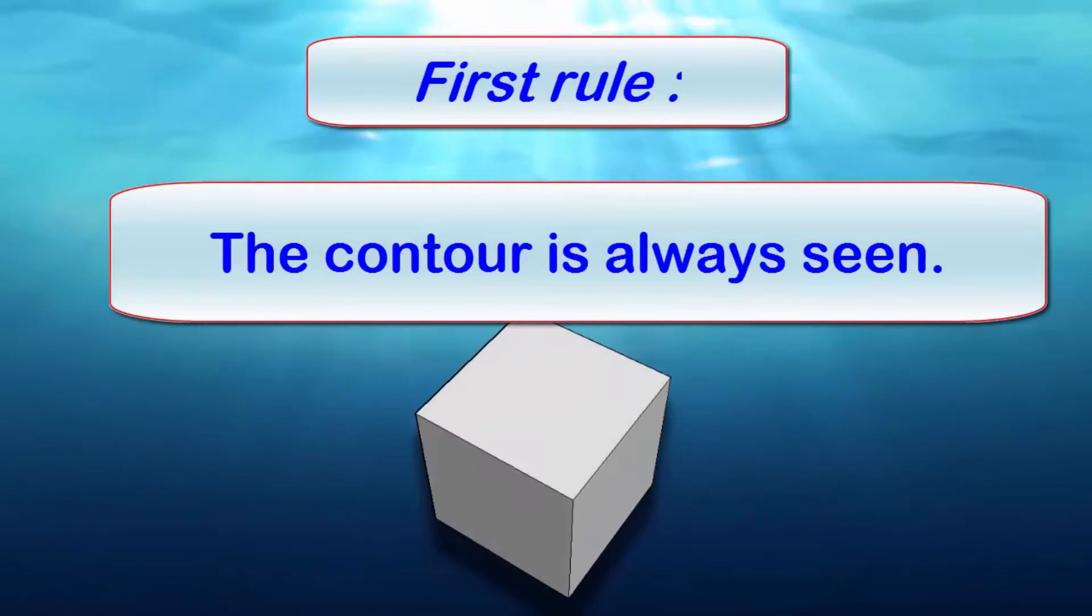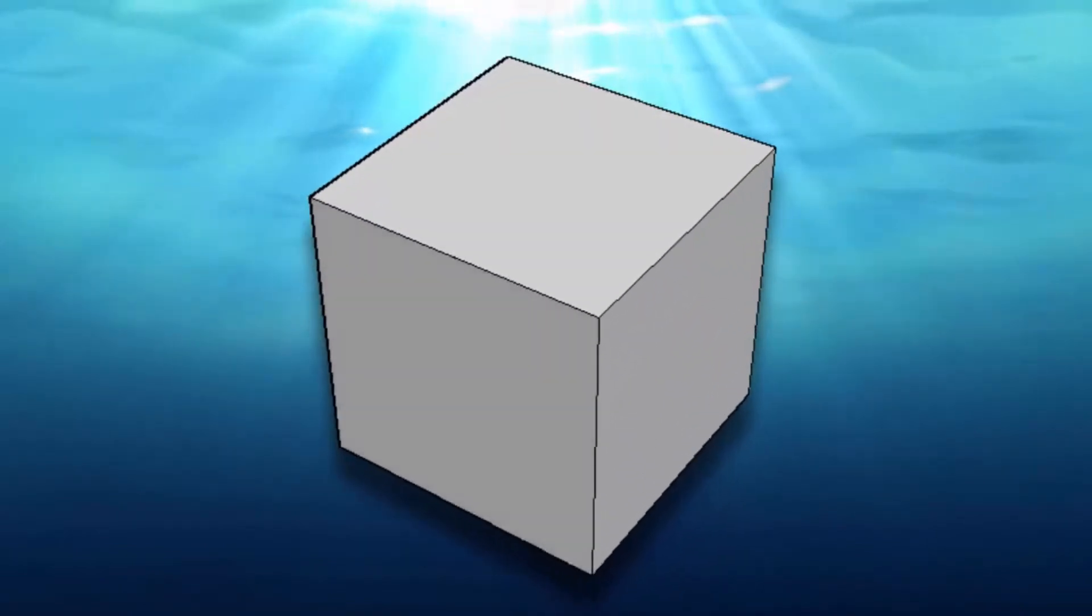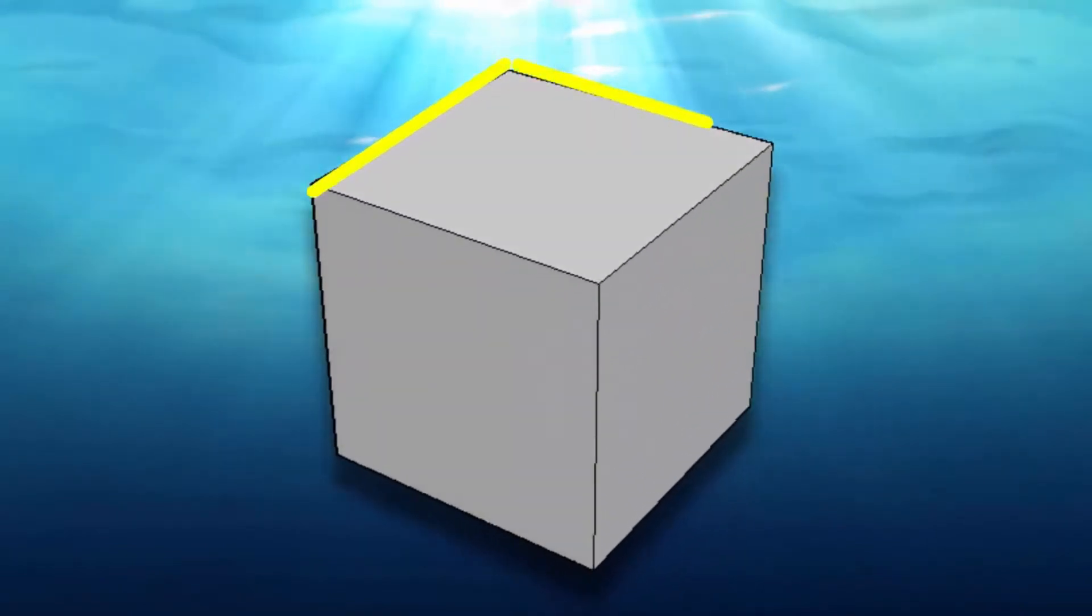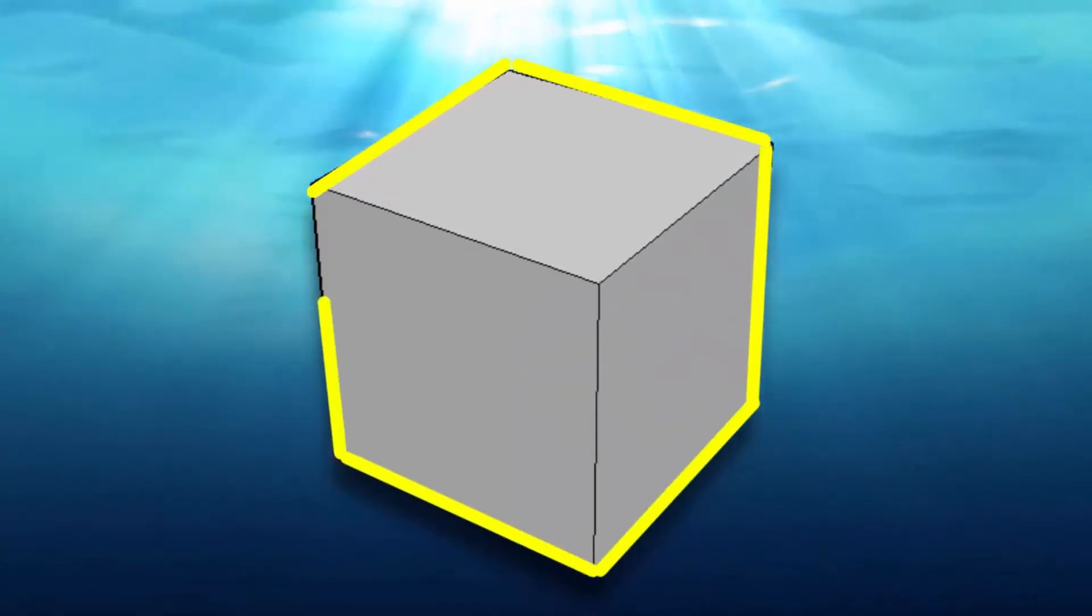The first rule says that the outline of a projection is always seen. The outline is the line around the eye, and it's always seen.